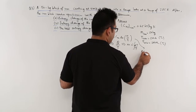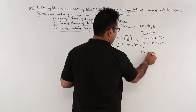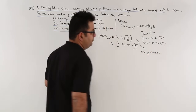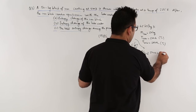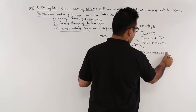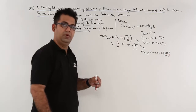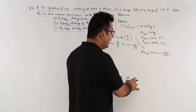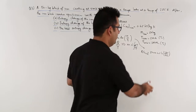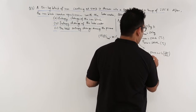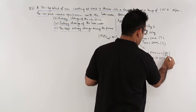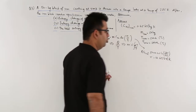For iron, this becomes 50 into 0.45 into log of 285 by 500. It will be a negative quantity because iron is losing heat, so the entropy goes down. This equals minus 12.65 kilojoules per Kelvin.